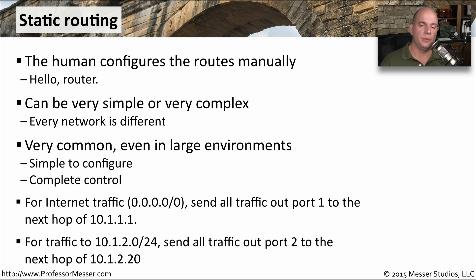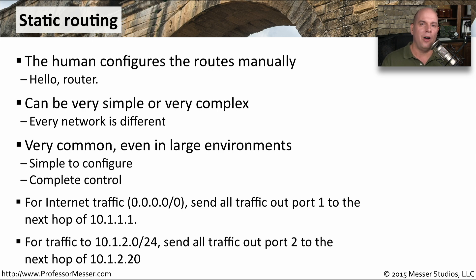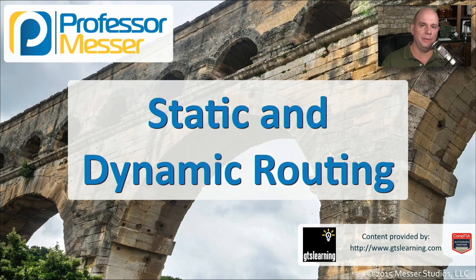One of the challenges with static routing is thinking about outages. You might have multiple routes going out of a router and set some metrics higher than others, so that if you lose your primary route, everything can begin routing through another link. In those cases, there's almost no convergence time because your static routes know exactly what to do if a connection is lost. You're already building out the redundancy statically and not relying on a dynamic routing protocol to do any type of convergence.